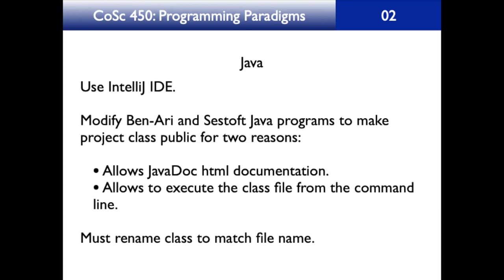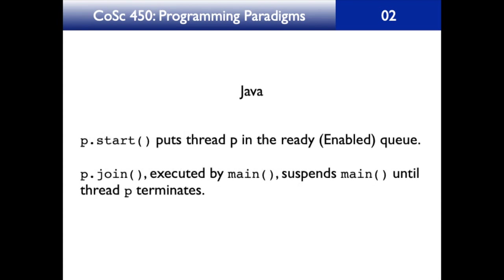Now let's look at how Java handles concurrency. It is really quite similar to C++, namely the join method. In Java we have p.join but we also have p.start. If p is a process and you want it to start executing, p.start puts the thread p in the ready queue or enabled queue. Then p.join, which is executed by main, suspends main until thread p terminates. So p.join in Java works exactly the same way as p.join in C++.